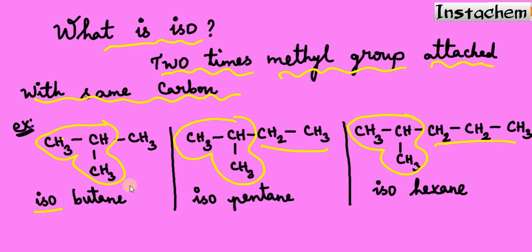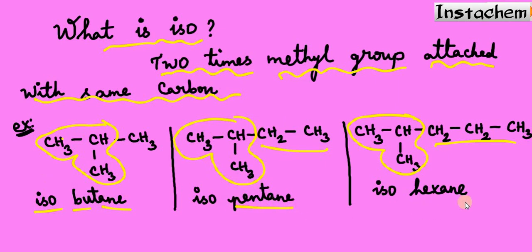Whenever two methyl groups are attached to the same carbon, we can use the term 'iso'. In the first case, there are four carbons in total, so we use 'but' — this is isobutane, as compared to the previously discussed n-butane. In the next case, five carbons total gives isopentane, and six carbons gives isohexane.